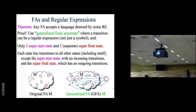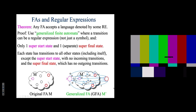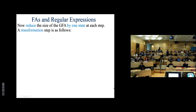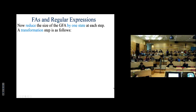We take a finite automaton, add epsilon states, a super start state, and put empty transitions on all transitions that aren't there. We also make all the self-loops appropriately. Then we reduce the size of this generalized finite automaton by one state at a time, getting more and more complicated regular expressions on transitions, until only one start state and one super final state remain with a single transition.